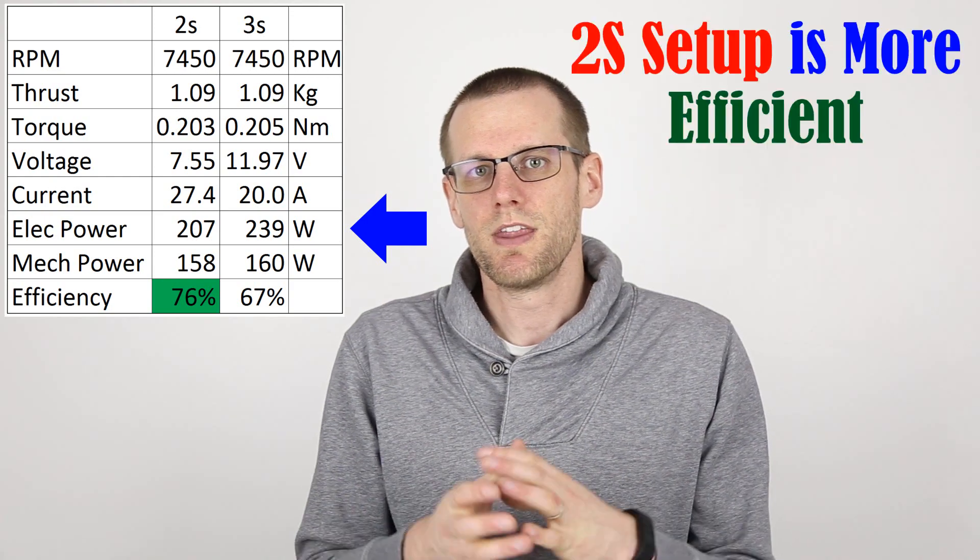So here you can see this is the chart from our two data points that we have selected, and both the 2S and the 3S pack comparison come out to the same RPM. When we look at the mechanical output of each of these systems, they are essentially the same thing. But the difference lies in the amount of electrical input to the system.